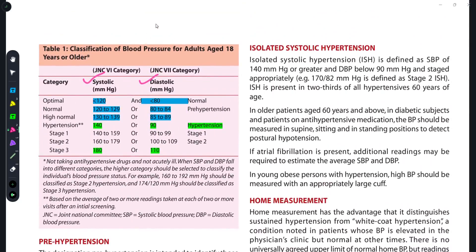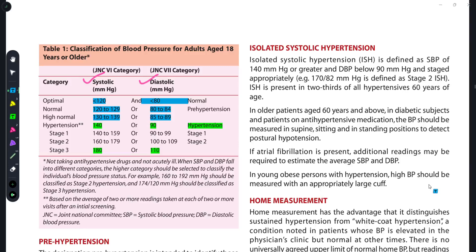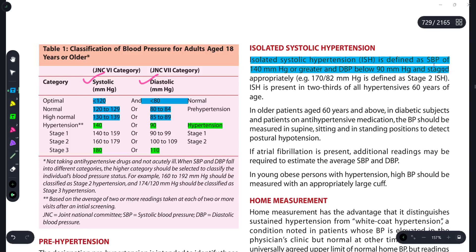Isolated systolic hypertension is when systolic blood pressure is 140 mmHg or greater, but diastolic blood pressure is less than 90 mmHg. So if elevation is seen only in the systolic blood pressure, that condition is called isolated systolic hypertension.